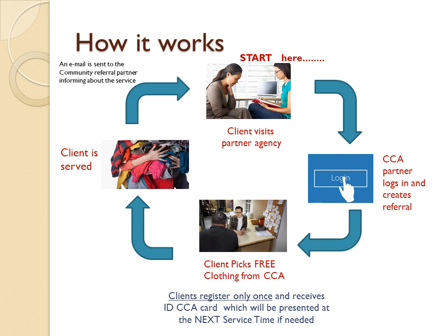How it works: The client visits the partner agency. The CCA partner logs in and creates a referral. The client picks free clothing from CCA. Clients register only once and receive a CCA ID card, which will be presented at the next service time if needed. The client is served, and an email is sent to the community referral partner informing them about the service.